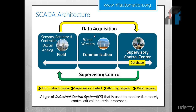Going deeper inside the system: in the field we have sensors, actuators, and controllers. Sensors measure input physical quantities, actuators control those quantities, and controllers are where you write the algorithm. We have two types — digital and analog — in the field. Communication can be wired or wireless. There is a supervising control center where the database is stored, and information is linked across all three areas.